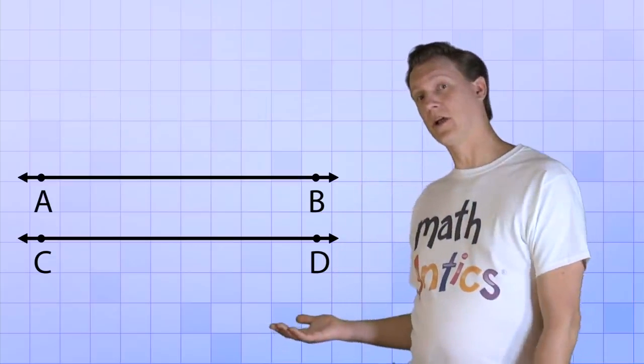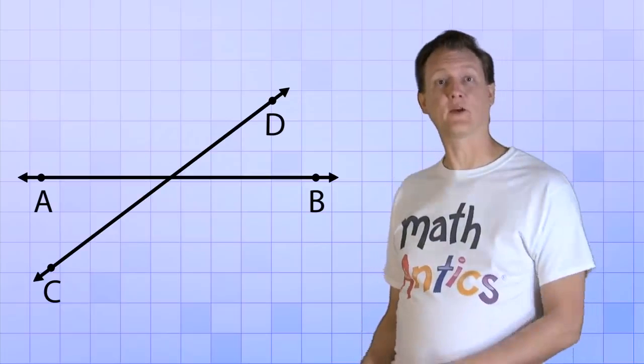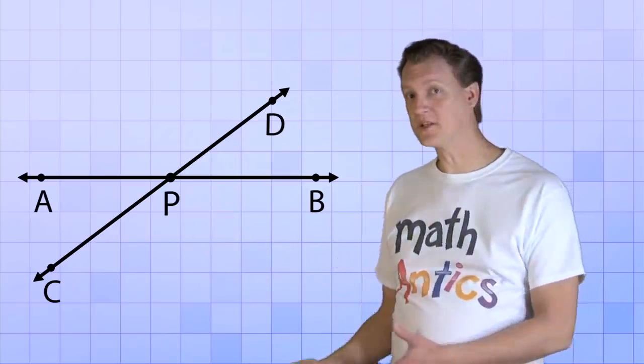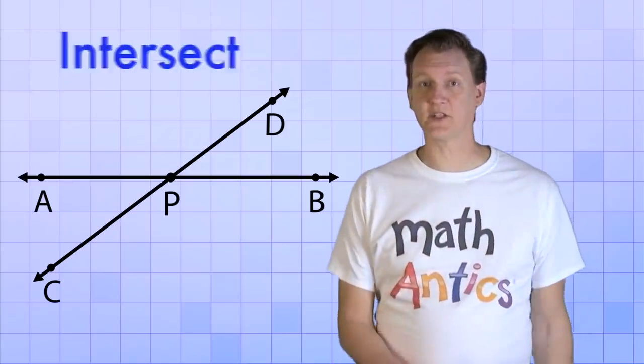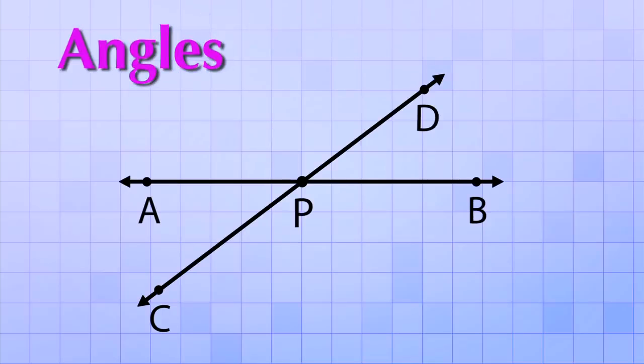But what if I take one of our lines and give it a little nudge? Now the lines aren't parallel anymore. In fact, they cross at this point right here. Let's name it Point P. When lines cross at a point like this, we say that they intersect and we call the point an intersection. And when lines intersect, they form angles.